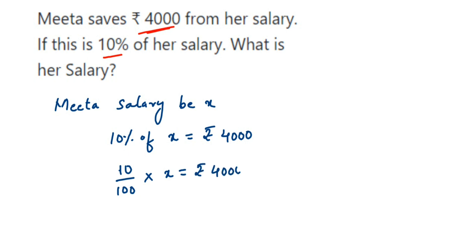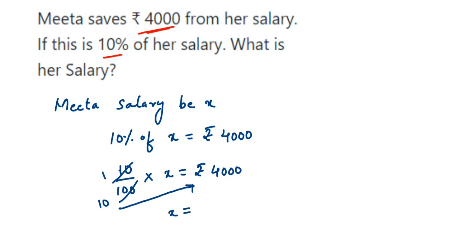Now we have to find out the value of X. We're going to transpose 100 to the other side. Before transposing, we can do a cancellation — cancel 10 and 100, so 10 ones are 10 and 10 tens are 100, leaving only 10 in the denominator. Transposing 10 to the other side — since it's in division, it comes as multiplication — so X equals rupees 4000 multiplied by 10.